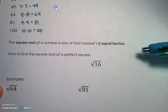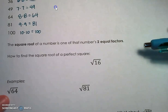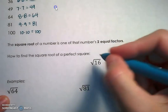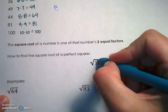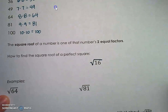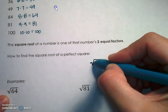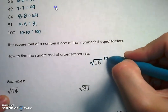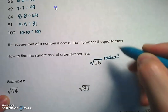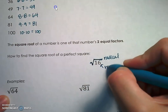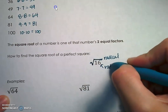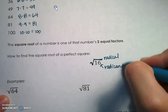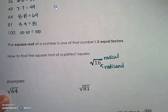How do you know you need to take the square root of a number? You're going to see what we call a radical symbol — that checkmark-looking thing. We call that a radical. The number under the radical is called the radicand. And if that radicand is a perfect square, then we can take the square root of that number and we'll get a whole value.